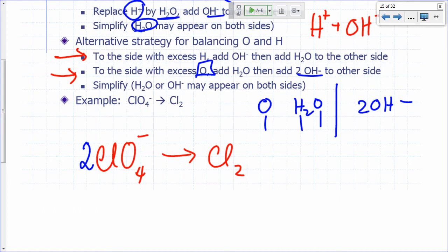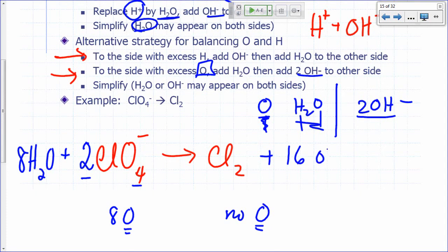So which side has an extra oxygen here? Left or right? Two times four, I have eight oxygens here, right? No oxygen here. So how many waters do I add to the left side? Every oxygen extra, I add water. So I add eight water to this side. And then what do I add to the other side? Twice as many hydroxides. So eight times two, 16 hydroxides.